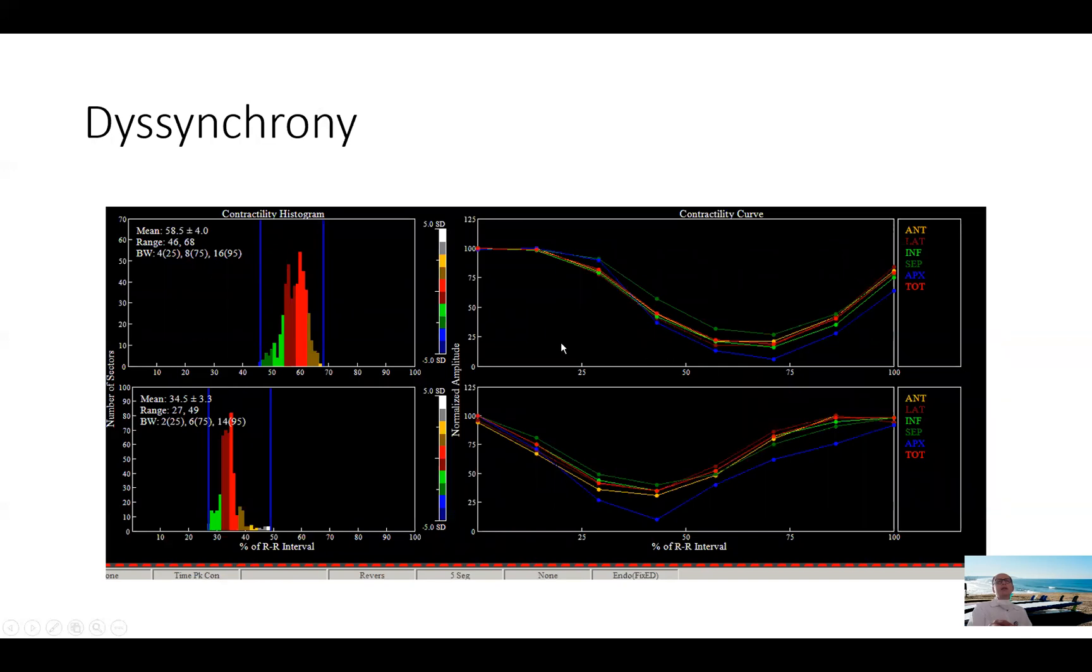Next, which is still in the realm of, despite the data here, is still in the realm of research and fancy things we do, we look at dyssynchrony imaging. This is dyssynchrony at rest and dyssynchrony post-stress. The most important number to look at is here the standard deviation of the mean of the synchrony and anything below eight usually is normal. So you can see here all the segments of the heart are contracting all almost at the same time and relaxing at the same time, both in the rest images and the stress images.